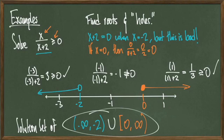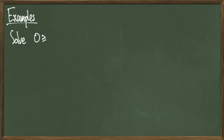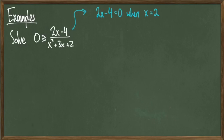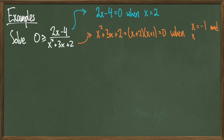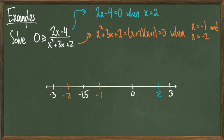The more challenging part of this process is really the bookkeeping. Let's do one last example. Solve the inequality 0 is greater than or equal to 2x minus 4 over x squared plus 3x plus 2. First step, I'll find the roots by setting the numerator equal to 0, giving me x equals 2. Then to find the holes I set the denominator equal to 0, and find the holes are x equals negative 1 and x equals negative 2. I'll plot those on the number line and pick test values: negative 3, negative 1.5, 0, and positive 3.